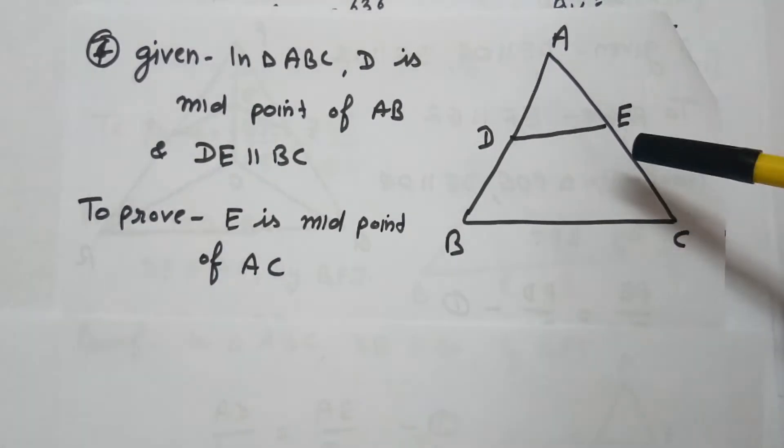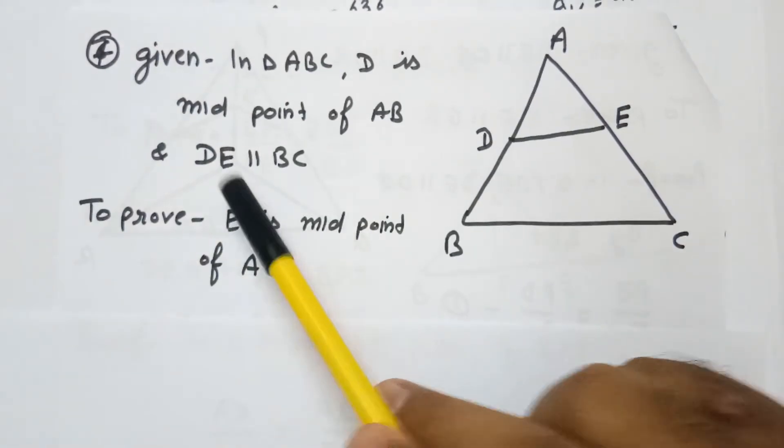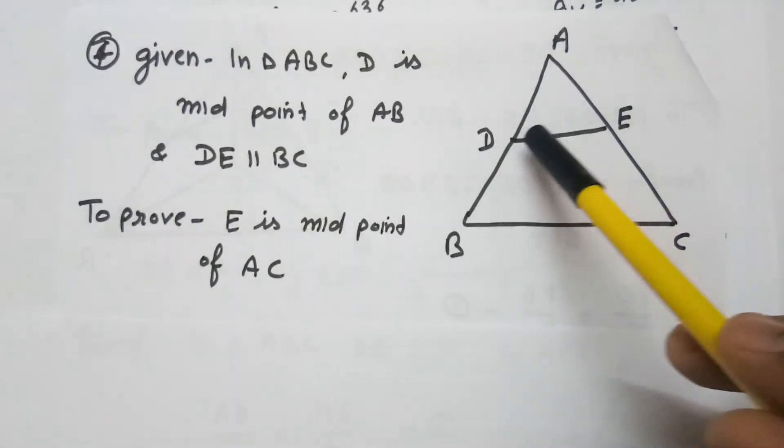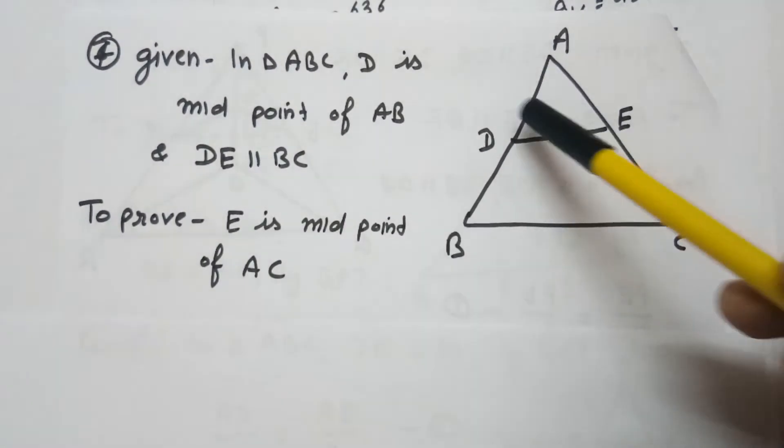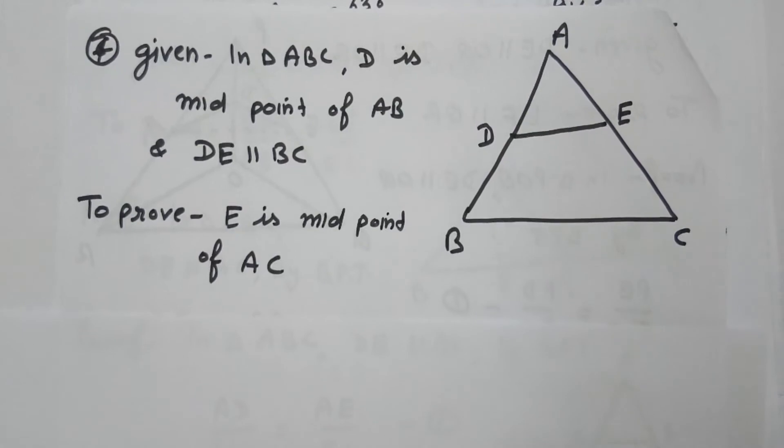So first of all, we will start from the given first part that DE is parallel to BC. Because in triangle ABC, when a line DE parallel to one side of a triangle, it divides the other two sides in equal ratio by basic proportionality theorem.